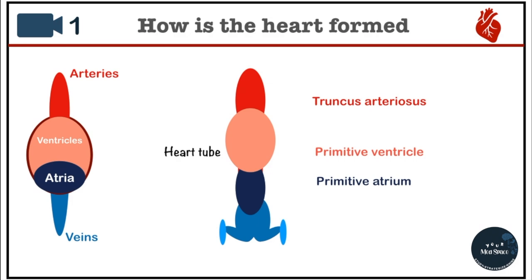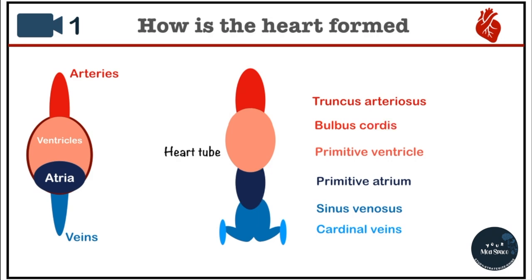Since there's something called arteriosus, there's probably something called venosus as well — and that's the role of this structure known as the sinus venosus. The sinus venosus along with the cardinal veins will majorly form the future veins of the heart. Between the primitive ventricle and the truncus arteriosus, there is a structure known as bulbous cordis. Blood moves from the ventricles to the arteries, and the structure that helps form this outflow tract is known as bulbous cordis.